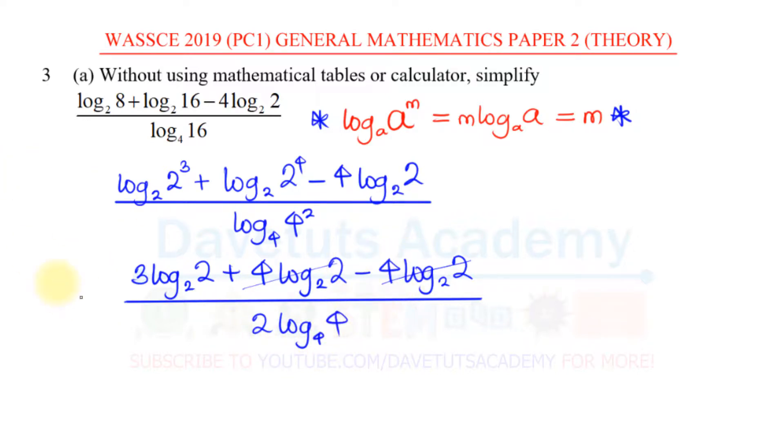Like I explained before, this is nothing but 3 multiplied by 1, because log to base 2 of 2 is 1, over 2 multiplied by 1 because log to base 4 of 4 is 2. And with that, you can just see that our answer is 3 over 2, or you can say it is 1.5.